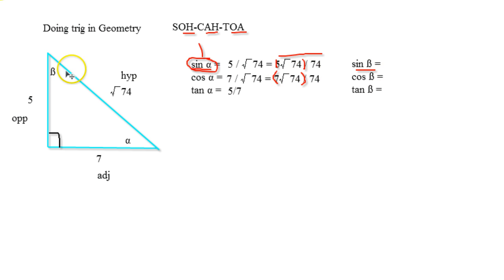Now sine of beta is going to be just the reverse of it. So sine of beta is going to be like cosine of alpha and it's going to be 7 root 74 divided by 74. Cosine is going to be 5 root 74 divided by 74. And then tangent is going to be just reverse, it's going to be 7 divided by 5. So finding the ratios are pretty easy as long as you use SOH CAH TOA.